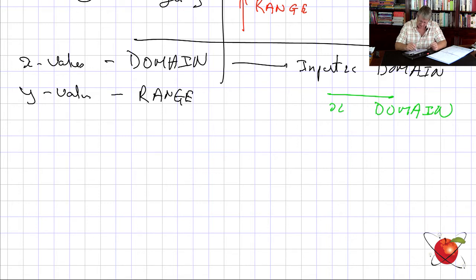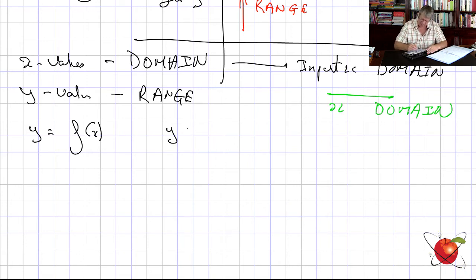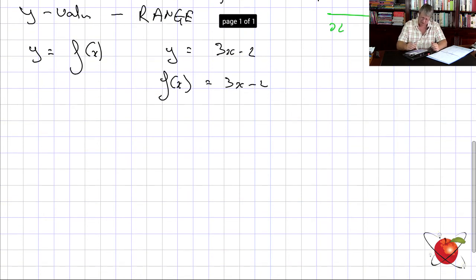We write it like this: y equals f(x). So y and f(x) are the same thing. Where we had y = 3x − 2, you could also write f(x) = 3x − 2.